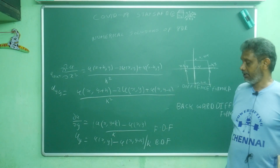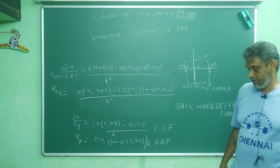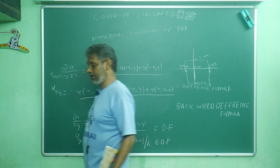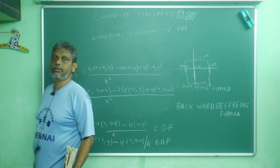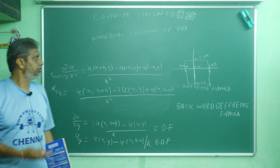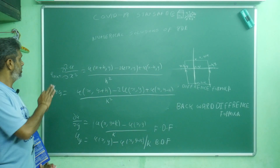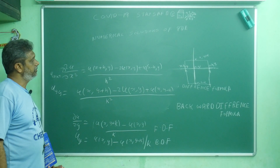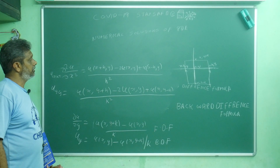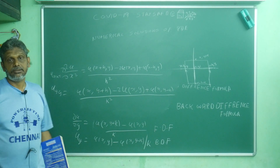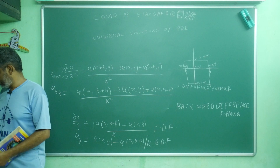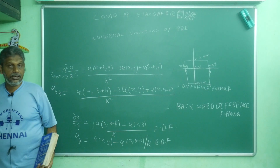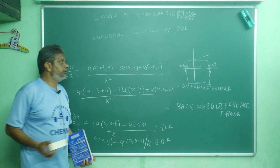Using these formulas — u_xx and u_yy — we can write the Laplace equation, Poisson equation, and then parabolic and hyperbolic equations. These four types of equations are the main ones we will cover. Now instead of writing x+h and y+k, I will use index notation.